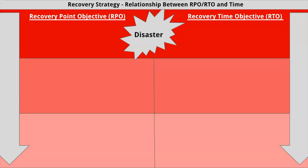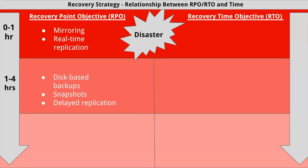Taking a deeper dive into the recovery strategy, we are going to understand the relationship between RPO, RTO, and time. If the RPO is within one hour from disaster, then mirroring and/or real-time replication strategies are used. If the RPO is between one and four hours from disaster, then disk-based backups, snapshots, or delayed replication strategies are used. If the RPO is between four and 24 hours from the disaster, then tape backups and log shipping strategies are commonly used.